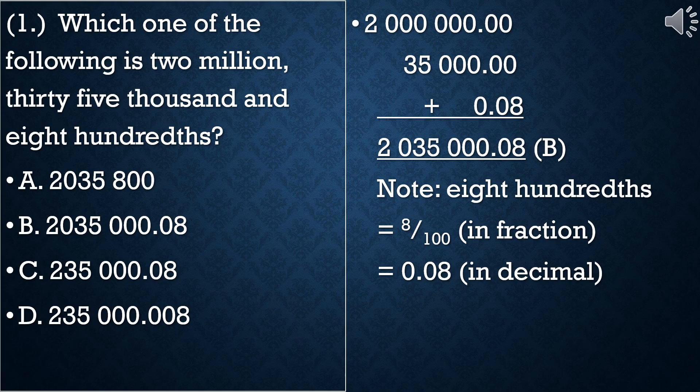Which one of the following is 2,000,000, 35,000, and 8 hundredths? You analyze them starting with 2,000,000, then 35,000. Note that 8 hundredths means 8 over 100 in fraction form and 0.08 in decimal form. So you add together all those numbers.